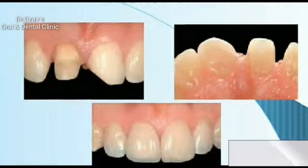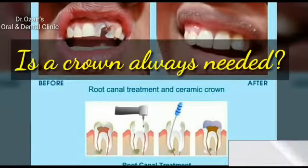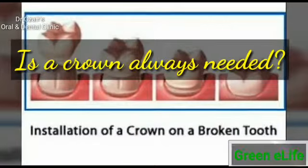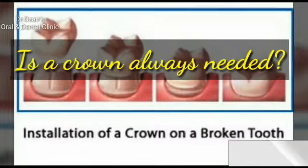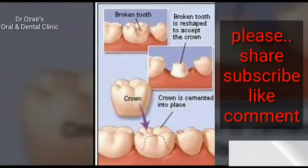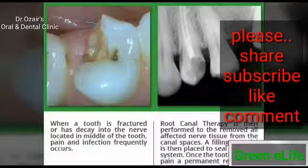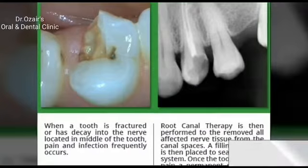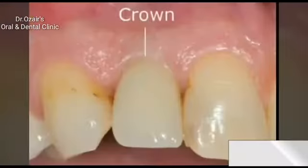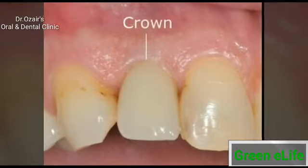Another advantage of crowns is that they restore the natural appearance of your teeth. For intact incisor and canine teeth, a root canal without crown replacement might be fine. The teeth at the front of the mouth experience less physical stress than premolars and molars because they are not used for chewing. However, incisors or canines that have been extensively excavated during a procedure may still need a crown.